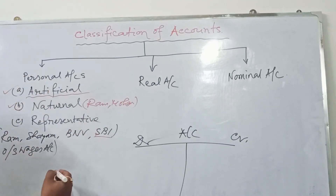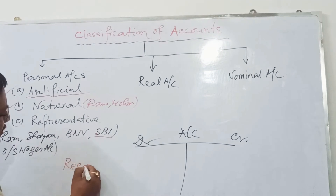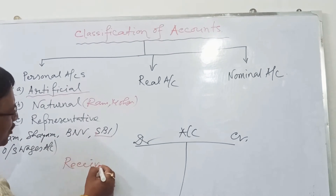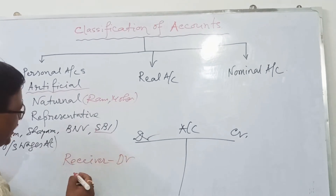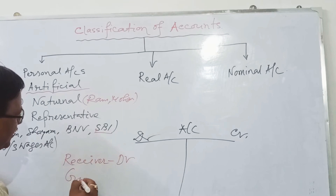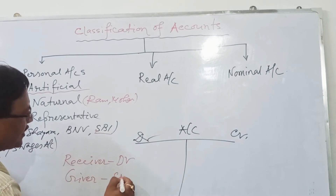What are the golden rules for personal accounts? The receiver is debited and the giver is credited.